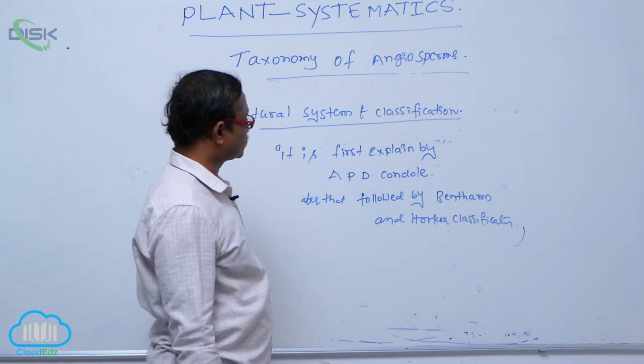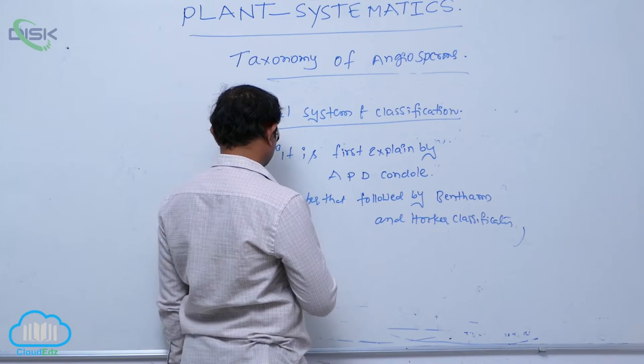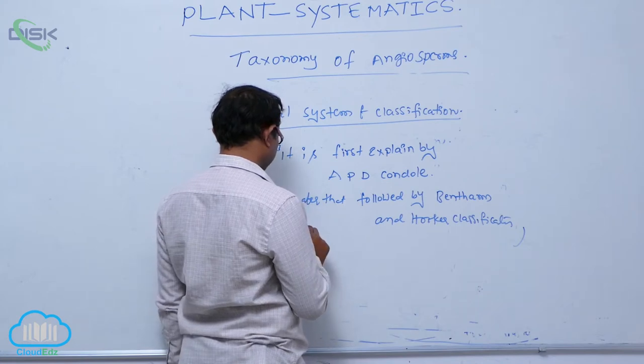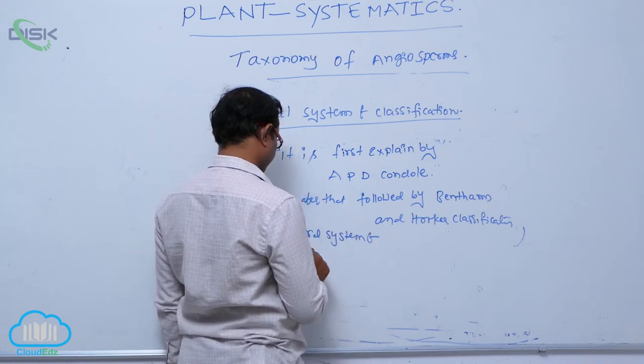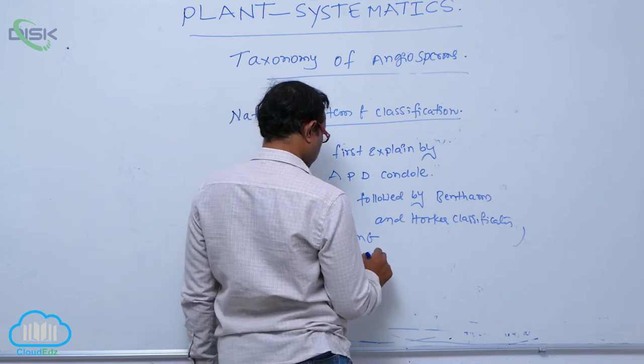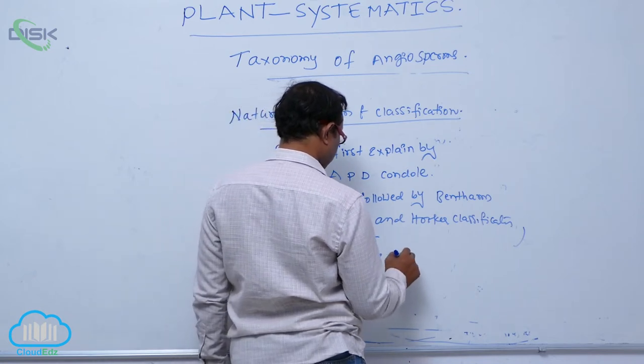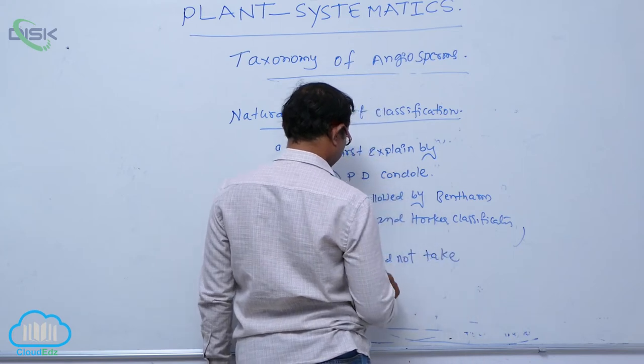That is the natural system of classification. But this natural system of classification has a demerit. The natural system of classification did not take evolutionary characters.